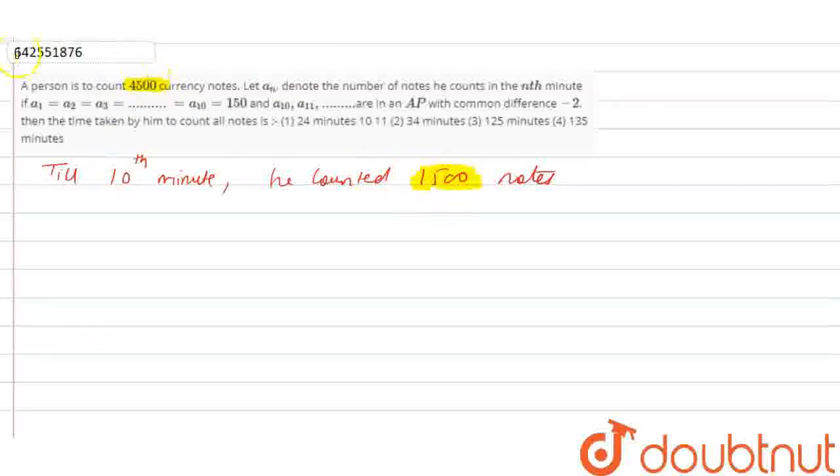Because A1, A2, A3 till A10 was 150, so for 10 minutes it will be 1500.